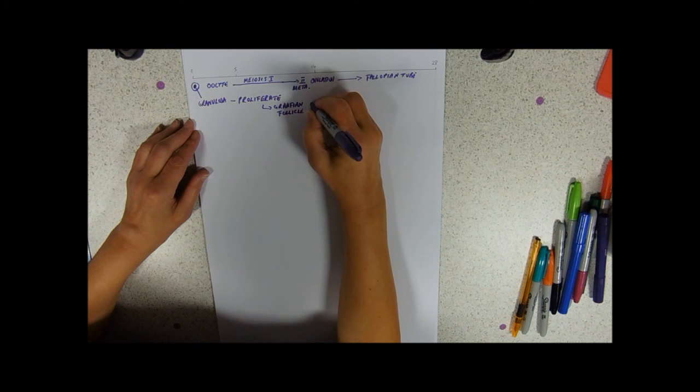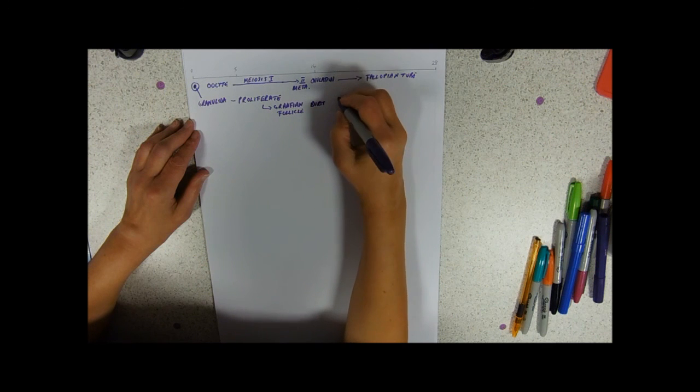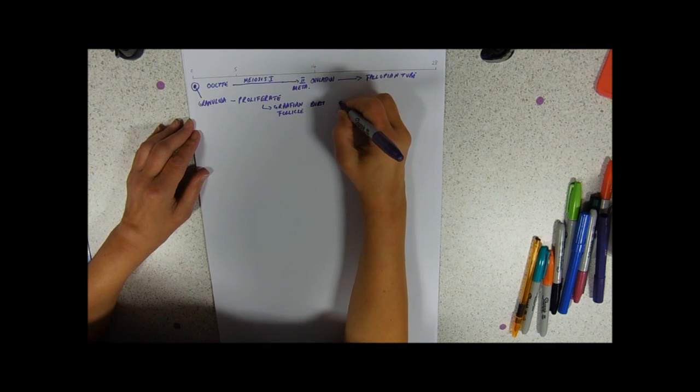And at ovulation that's going to burst open and what happens to the cells is that they're going to form the corpus luteum.